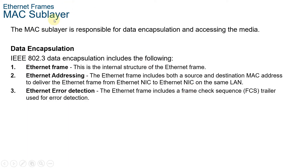The MAC sublayer is responsible for data encapsulation and accessing the media. IEEE 802.3 data encapsulation includes the Ethernet frame, Ethernet addressing, and Ethernet error detection. The Ethernet frame is the internal structure of the Ethernet frame. For Ethernet addressing, the frame includes both a source and destination MAC address to deliver an Ethernet frame from Ethernet NIC to Ethernet NIC on the same LAN. The Ethernet frame also includes a frame check sequence or FCS trailer used for error detection.